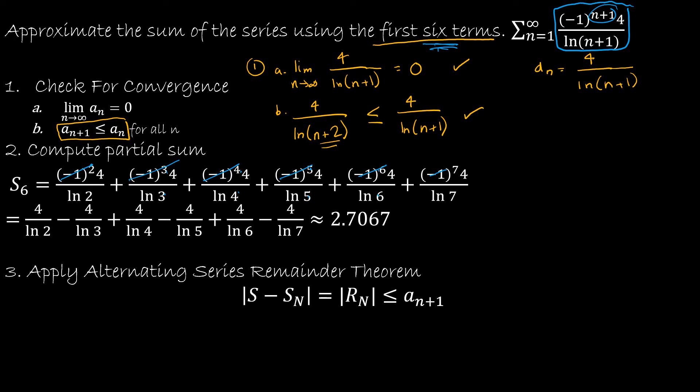From here I'm now going to look at the alternating series remainder theorem. And here's what that remainder theorem says. That says that if I take S, S is the actual sum and I don't know the actual sum. So it says that the actual sum minus S sub six which is 2.7067 has to be less than or equal to the first term that I didn't use.